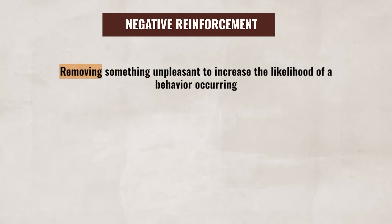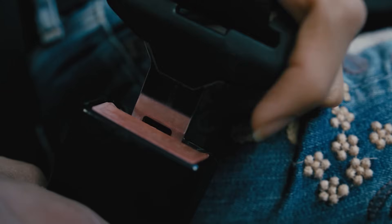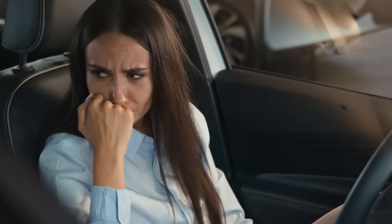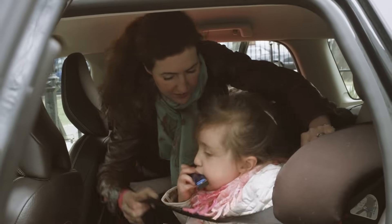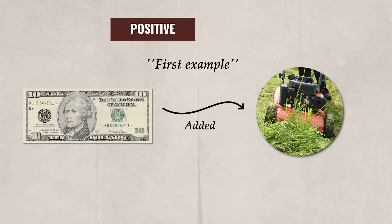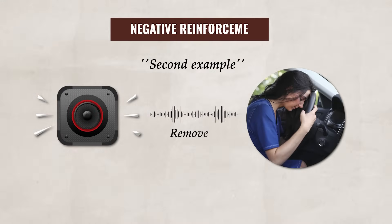On the other hand, negative reinforcement involves removing something unpleasant to increase the likelihood of a behavior occurring. For instance, when you get in the car and don't buckle up, the car starts beeping at you. This annoying sound doesn't stop until you buckle your seatbelt. Trying to get the annoying sound to stop motivates you to buckle your seatbelt, and next time when you get in the car, you buckle your seatbelt right away. Notice that in our first example, you are given $10 to cut the grass — the money is being added to the situation, so it's positive reinforcement. Whereas with the car beeping, you do an action to remove the sound, so it's negative reinforcement. Both of these examples are reinforcements because the money and the removing of the sound motivate the individual to perform the action in the future.